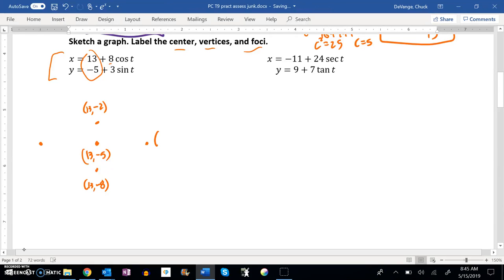So if I add 8 to 13, that's 21. The height hasn't changed, so it's still at negative 5. And if I go back 8 from 13, that would be 13 minus 8, which is 5. It still has a height of negative 5. So then I can try and draw my ellipse, something that is elliptish.